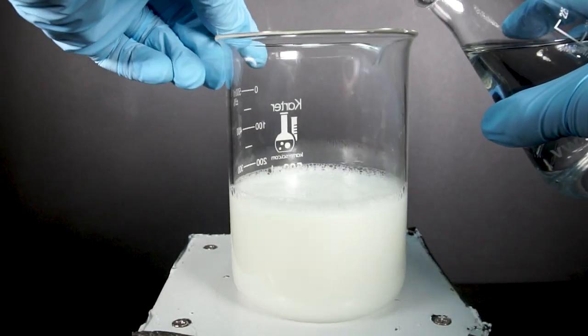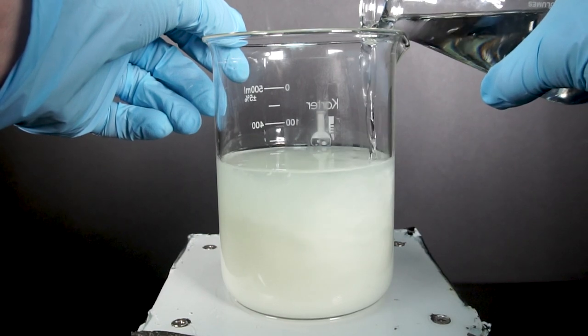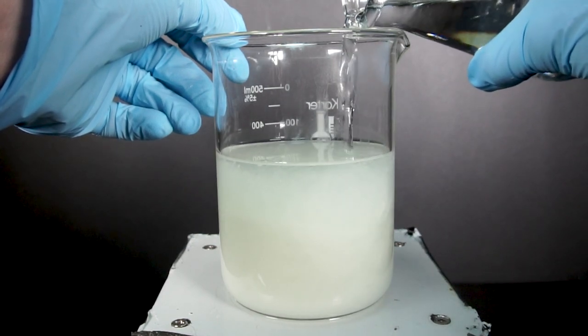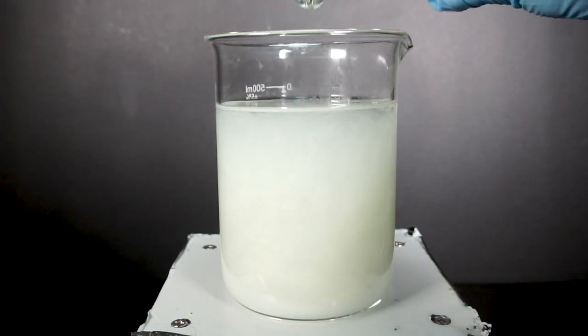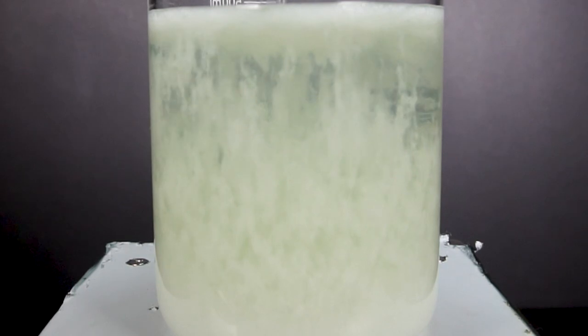After all my solution had been filtered, we are able to move on to one of our last steps. For this, we will need to dump ice-cold isopropyl alcohol into the solution. As we pour everything in, we see white goopy strings start to precipitate out.